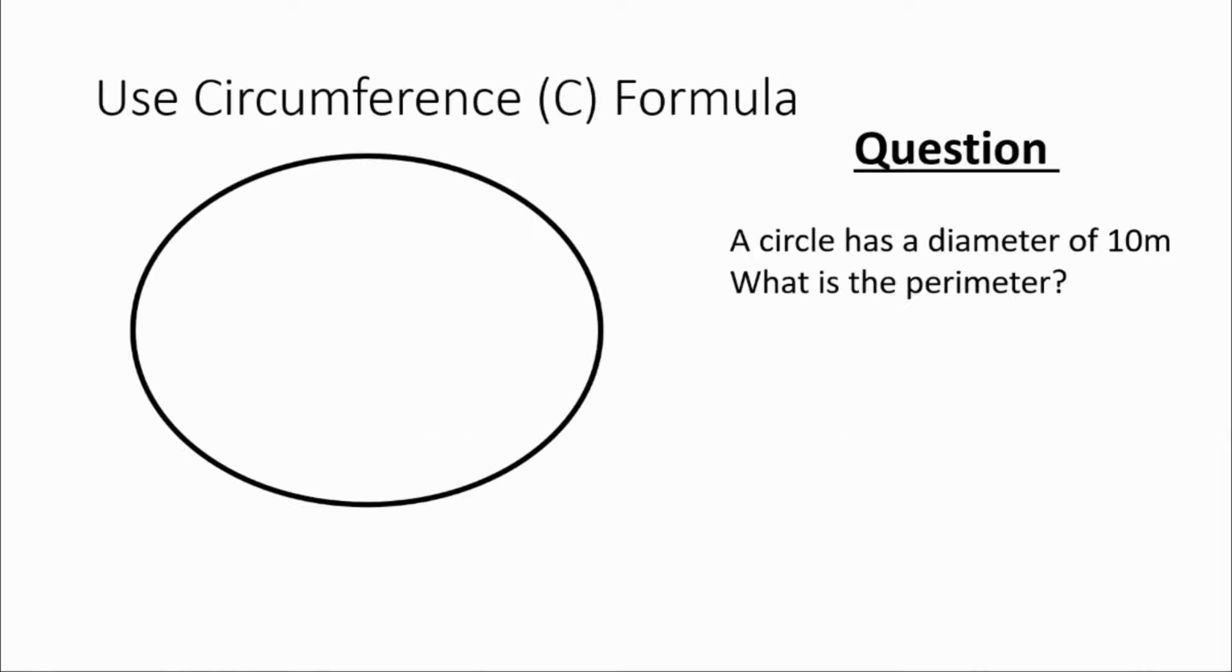So that means that we can use the circumference formula. And in math, we usually represent the circumference with a capital C. And the formula is that the circumference is equal to pi multiplied by the diameter.